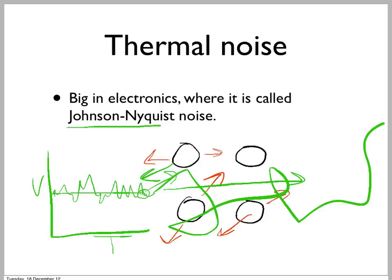This is actually called Johnson-Nyquist noise, and it's the fundamental limit to most electronic circuits. You can listen to some yourself — just take a radio and tune it off station, and the hiss you hear is exactly this: the random motions of the electrons being bumped around, amplified by your electronics to make a hissing noise.